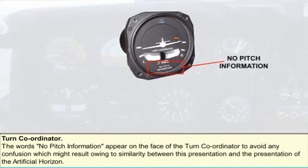The annotation 'no pitch information' on the indicator scale is given to avoid any confusion regarding pitch information, which might result from the similarity between this presentation and the presentation of the artificial horizon or attitude indicator.